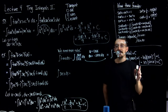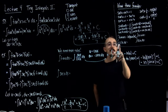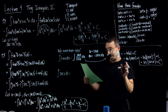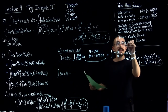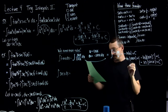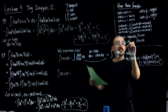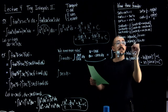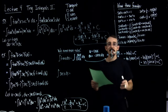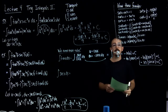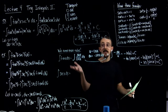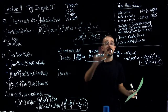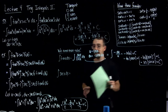Very similarly, the integral of cotangent — you can do the exact same method — is ln of the absolute value of sine of x plus C. If you don't believe me, do the same process: integrate cotangent using a u-substitution.